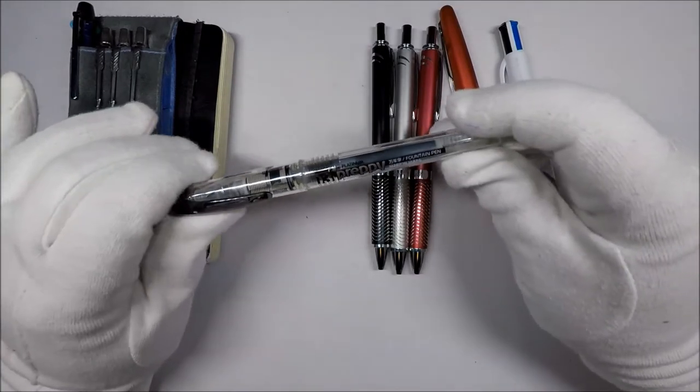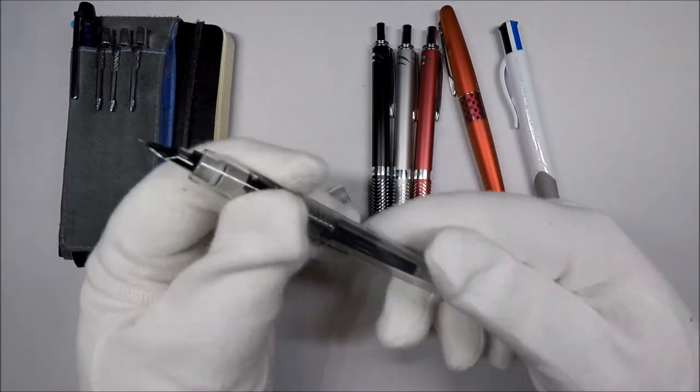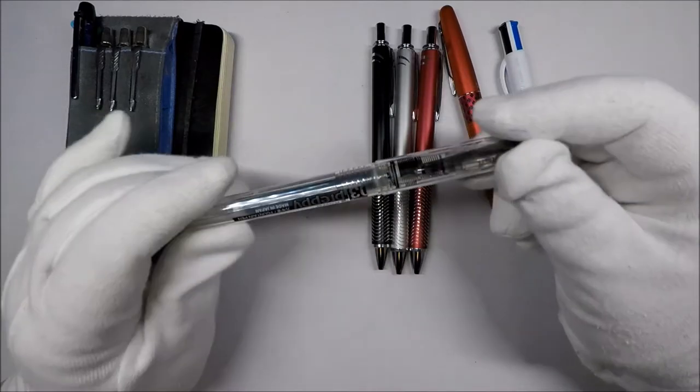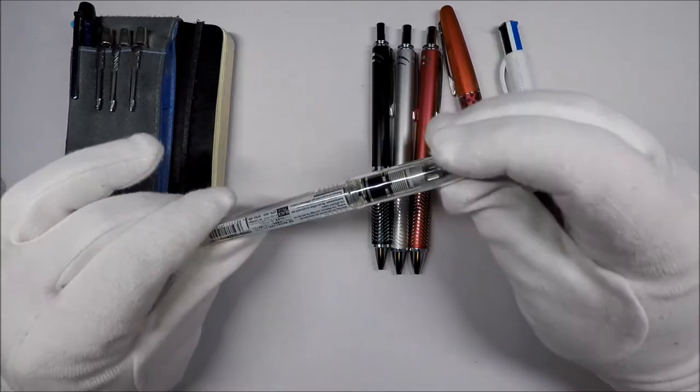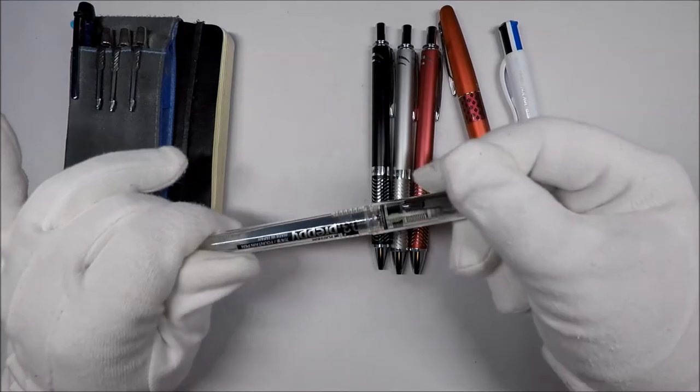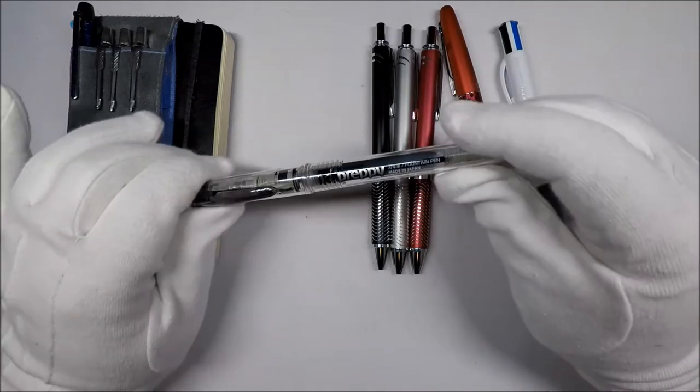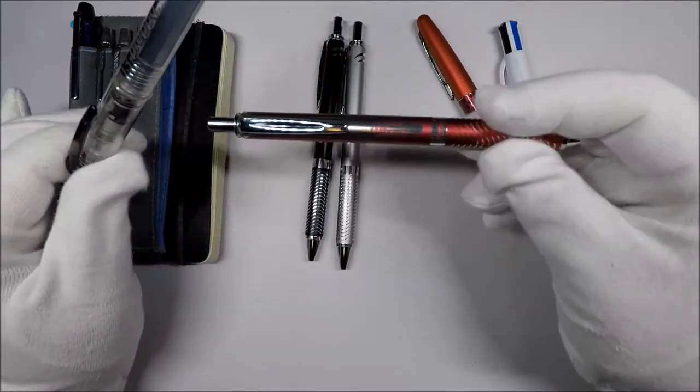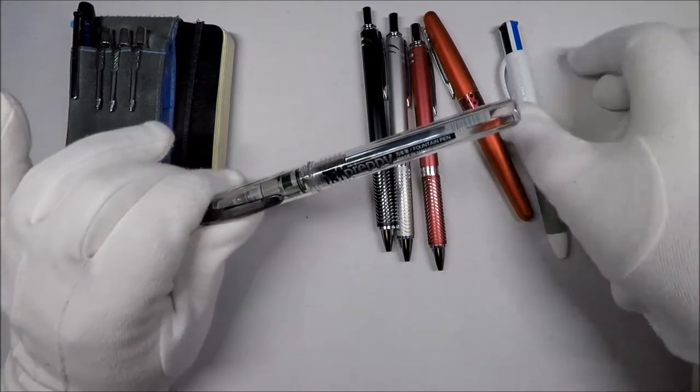This one right here is a Platinum Preppy. This is kind of a disposable fountain pen that takes cartridges, but it is inexpensive enough to be considered disposable. If you want to get a fountain pen for someone who you have no idea if they're going to love or hate fountain pens, these run about $2. I got a pack of seven of them in different colors for like $12. If you want to give someone a fountain pen to let them try it out and you're not 100% sure if they're going to like it, or if it's going to get lost, it's not a tragedy to lose a $2 pen.